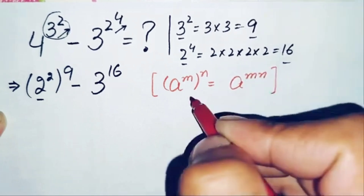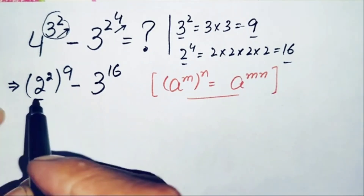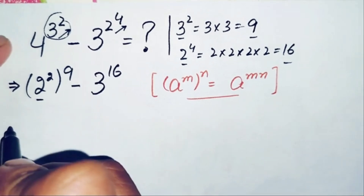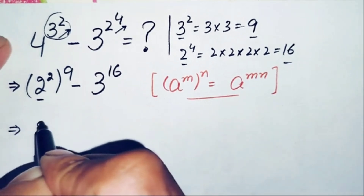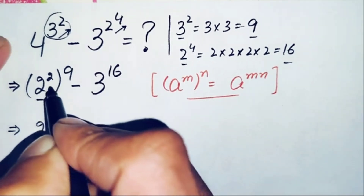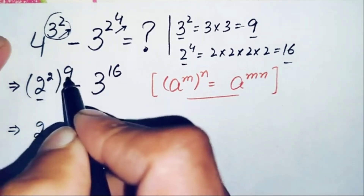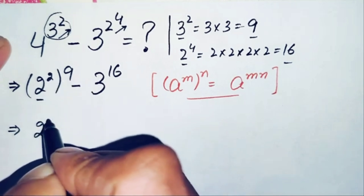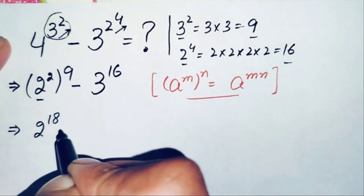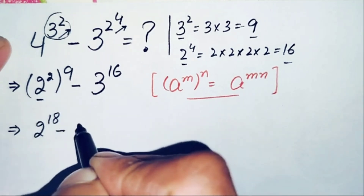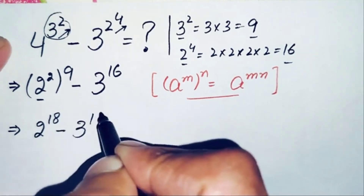Using this exponential property, this term becomes 2 raised to power 2 times 9, which is 2 raised to power 18, minus 3 raised to power 16.